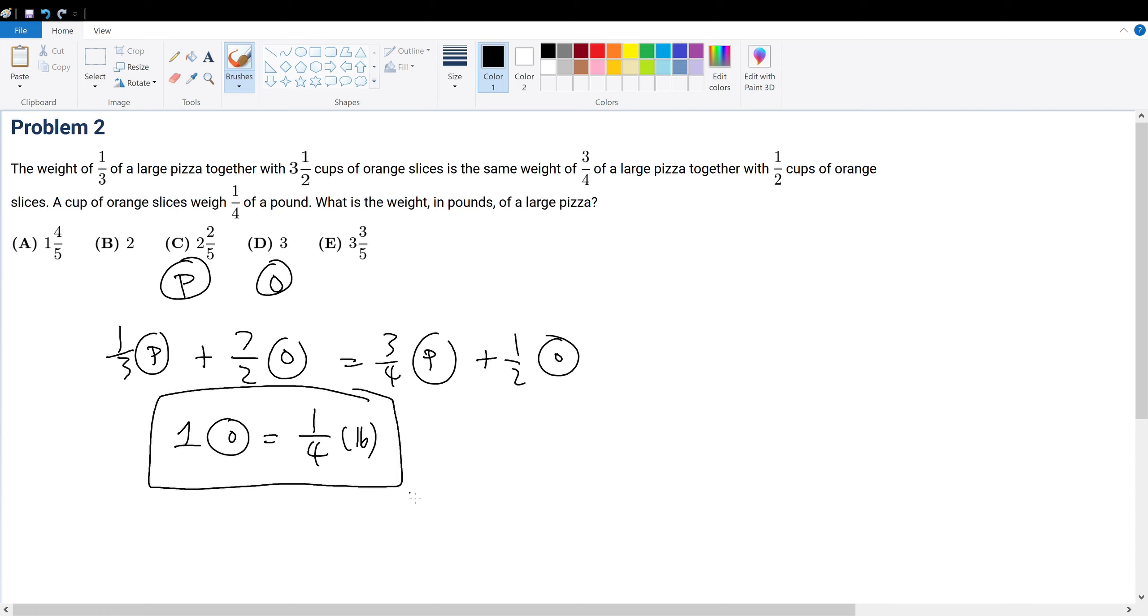So we can substitute this into the equation to solve for p. We have one-third p plus seven over eight pounds is equal to three-fourths p plus half times one over four, which is one over eight pounds.